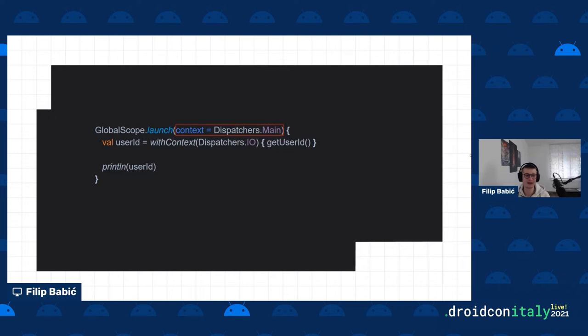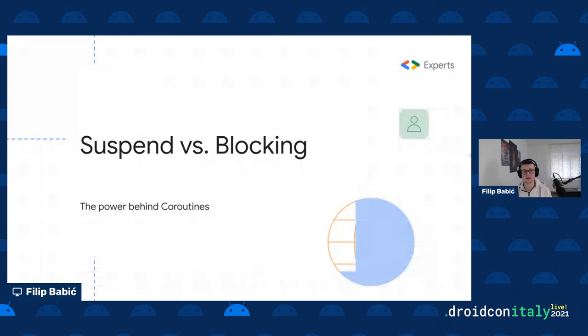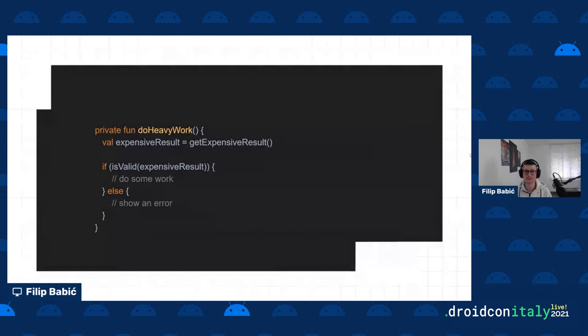Inside the launch block, you do some work using `withContext` with `Dispatchers.IO`. What happens is that `withContext` suspends the coroutine, shifts to the background IO thread, runs the `getUserId` function, and once done, returns to the main dispatcher and prints the user ID. This illustrates the key concept of suspending versus blocking. A regular blocking function would block the entire thread until the result is ready.